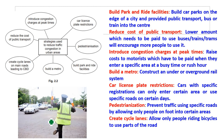Strategies to reduce traffic congestion: build park-and-ride facilities - car parks on the edge of the city with public transport (bus or train) into the city center. Reduce the cost of public transport - lower fares for buses and trains. Introduce congestion charges at peak times - motorists pay a fee to enter a specific area during rush hours. Build a metro - an underground rail system.